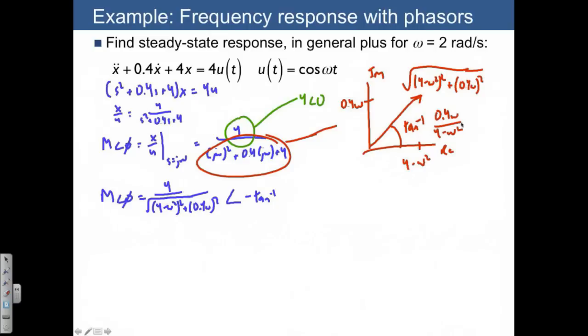So it's really 0 minus the arctangent of 0.4 omega divided by 4 minus omega squared. In other words, the steady state solution is going to be 4 over square root of 4 minus omega squared squared plus 0.4 omega squared cosine of omega t minus arctangent of 0.4 omega divided by 4 minus omega squared.